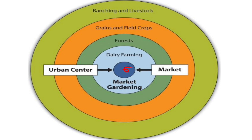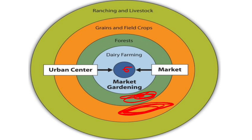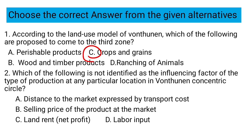The perishable products like vegetables, milk, and dairy farming are produced nearest to the market. Next, bulky products like timber and woods are expected at the second zone. Grains and crops are cultivated in the third zone, and ranching of animals is in the fourth zone. The correct answer is C.